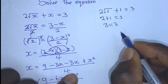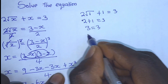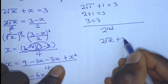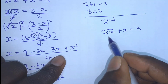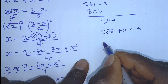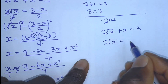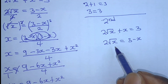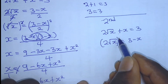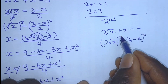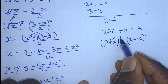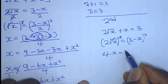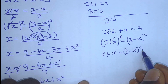The second method: we have 2 square root of x plus x is equal to 3. So we can isolate the radical term. Therefore, we have 2 square root of x is equal to 3 minus x. From this step, we can square both sides of the equation. This square root gets cancelled with the square, and the 2 squared gives 4, leaving us 4 times x, which is equal to 3 minus x, 3 minus x.